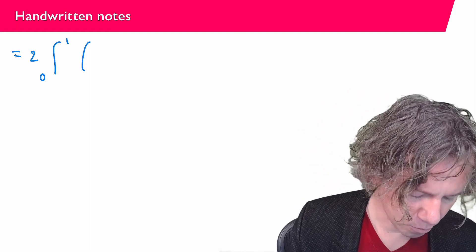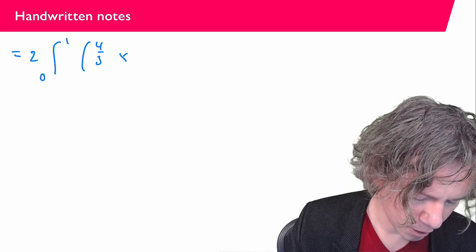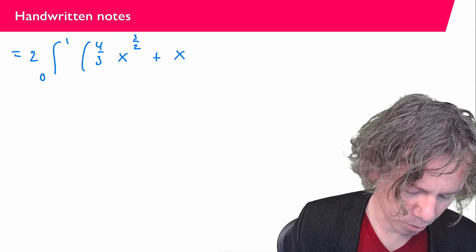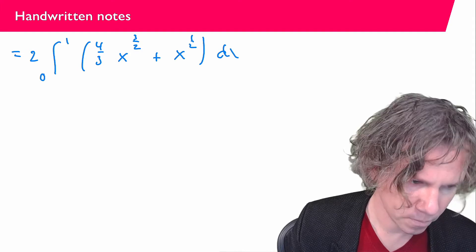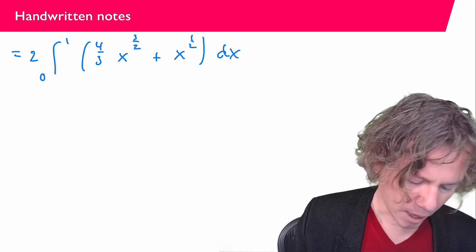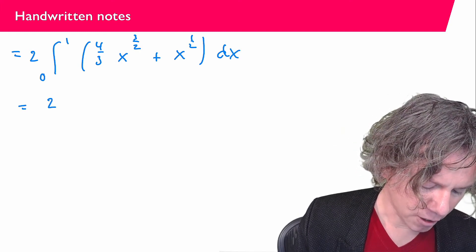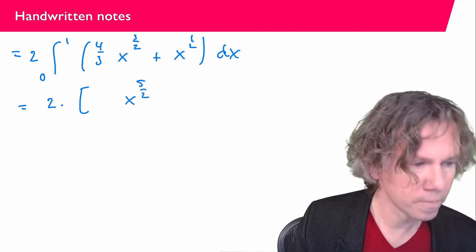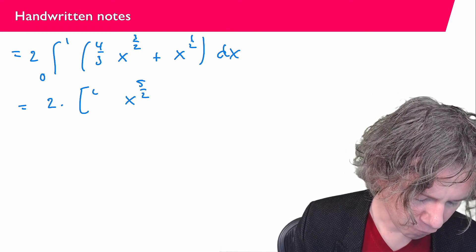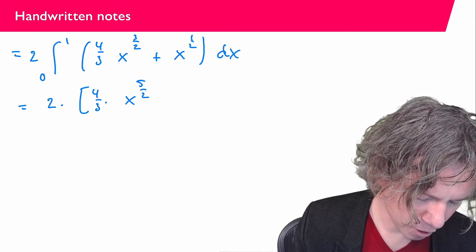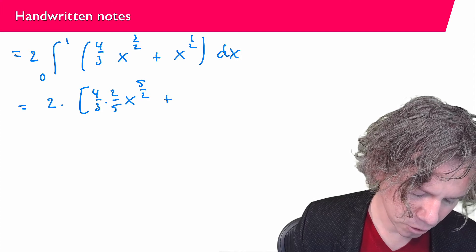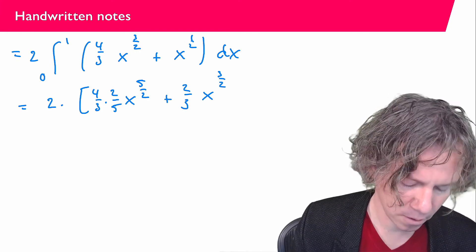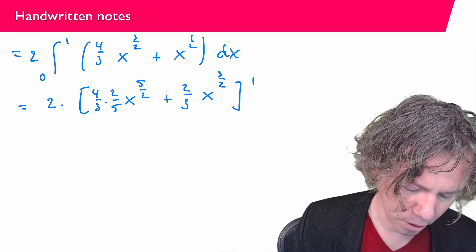And I can easily find an anti-derivative here. That's going to be x to the power of 5 over 2 and then I have to compensate. So I have a 4 over 3 already and I have to put in a 2 over 5 plus this is going to be x to the power of 3 over 2 and I have to compensate with 2 over 3 in between 1 and 0.